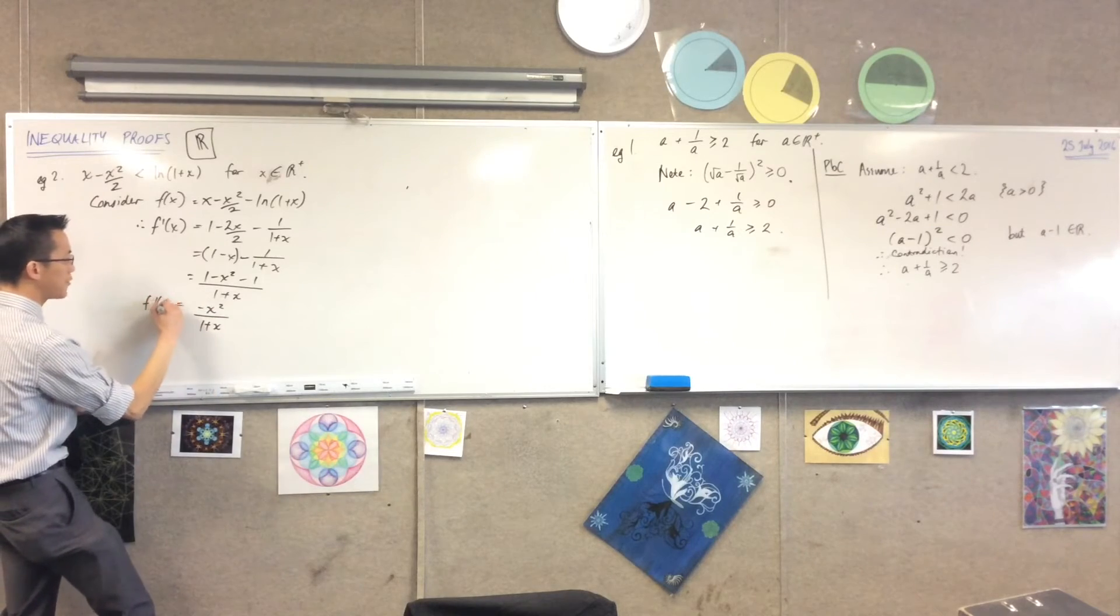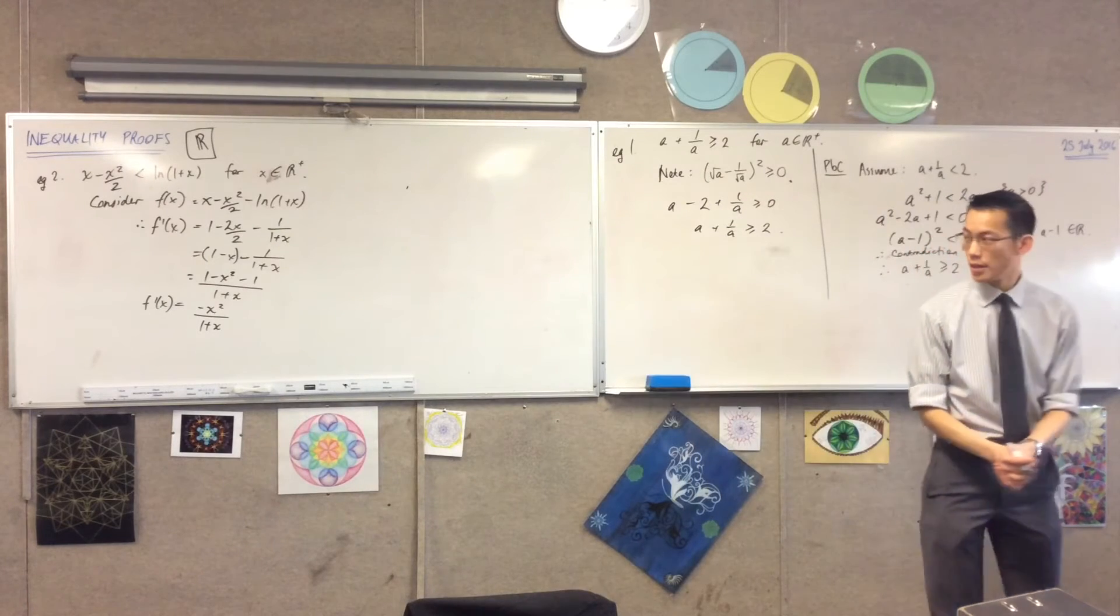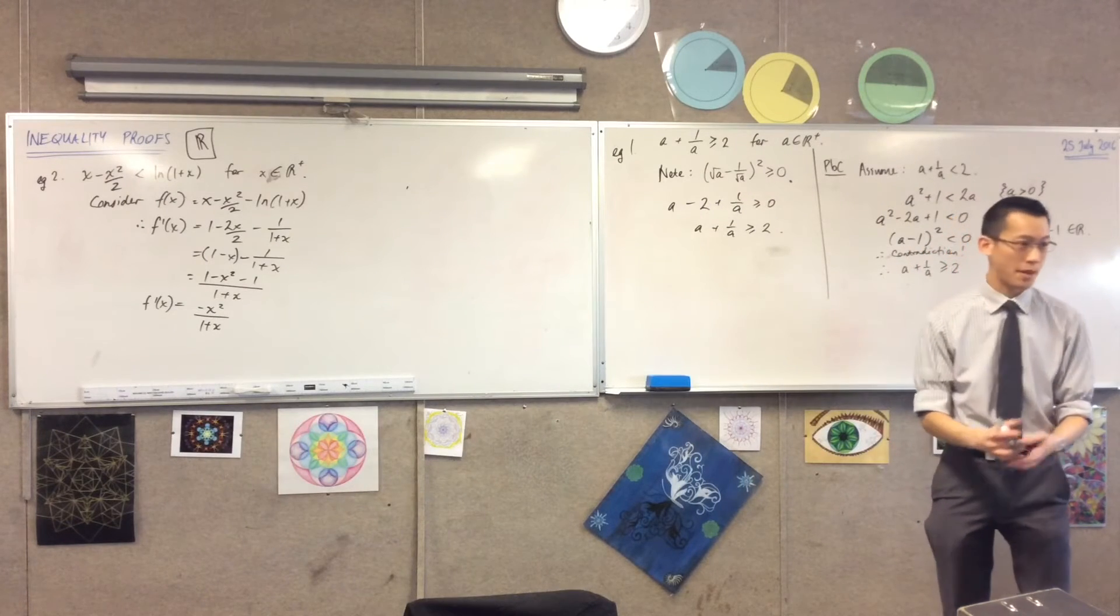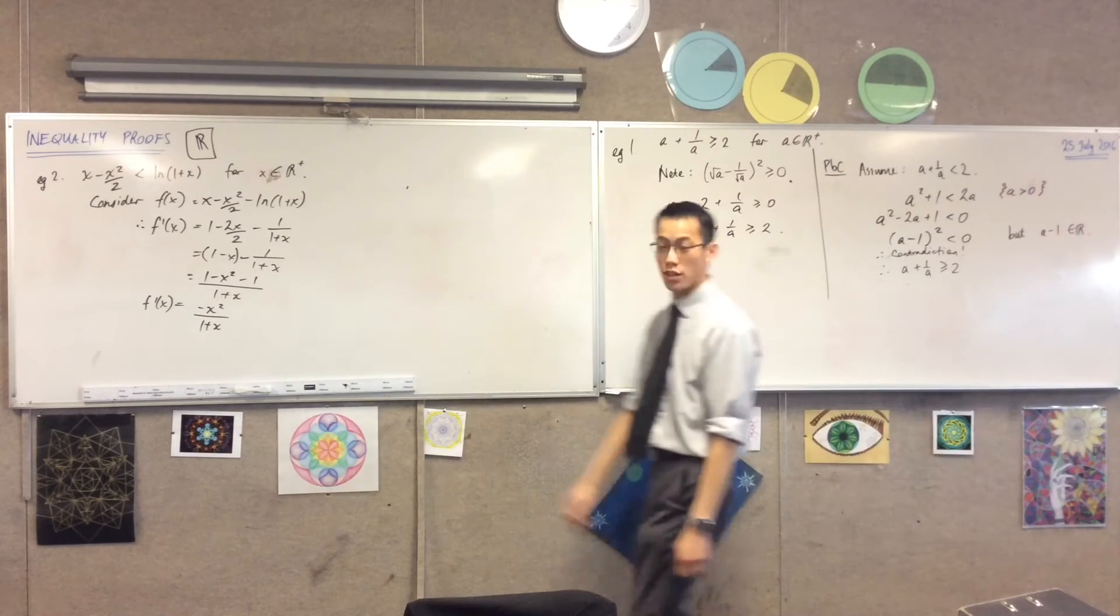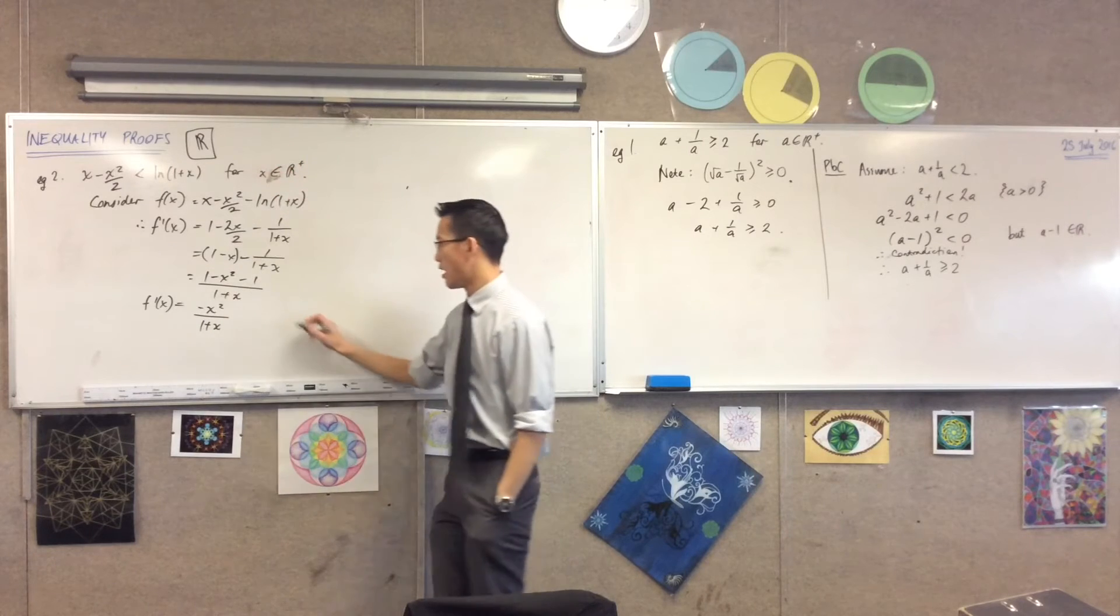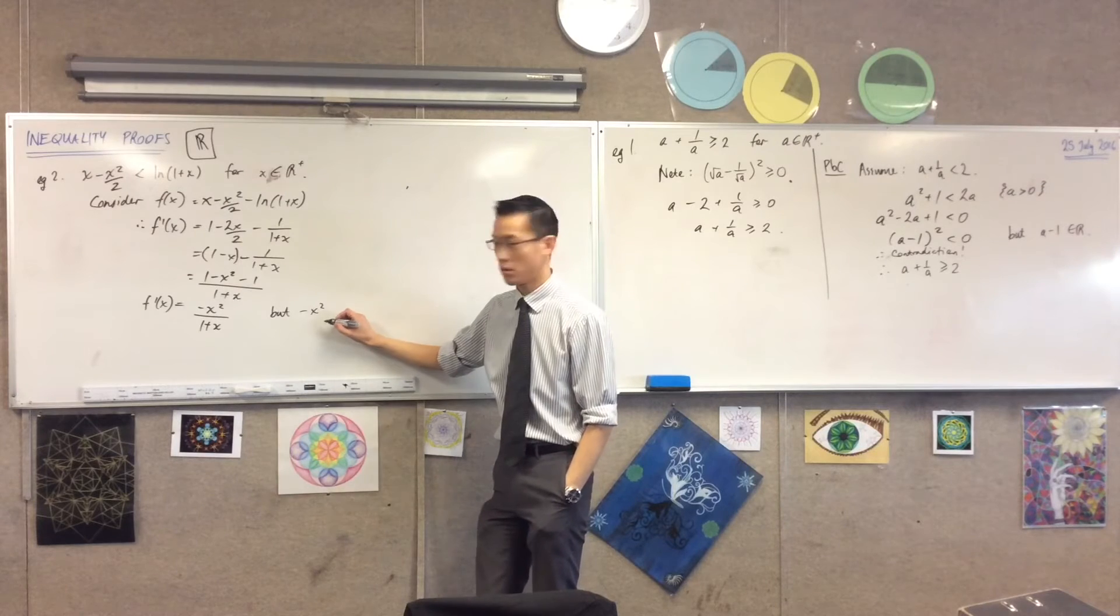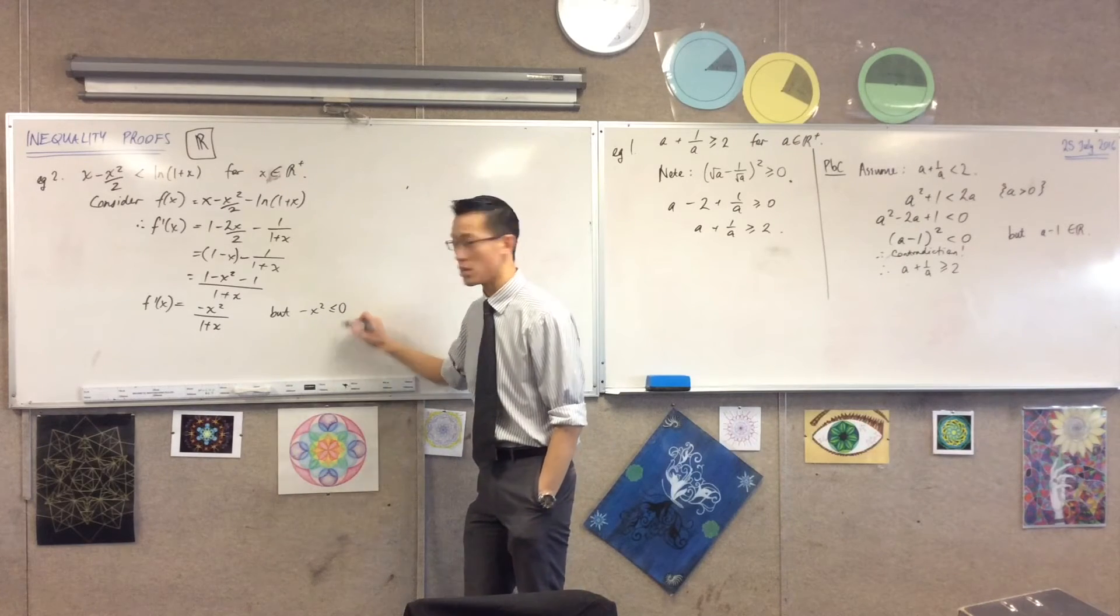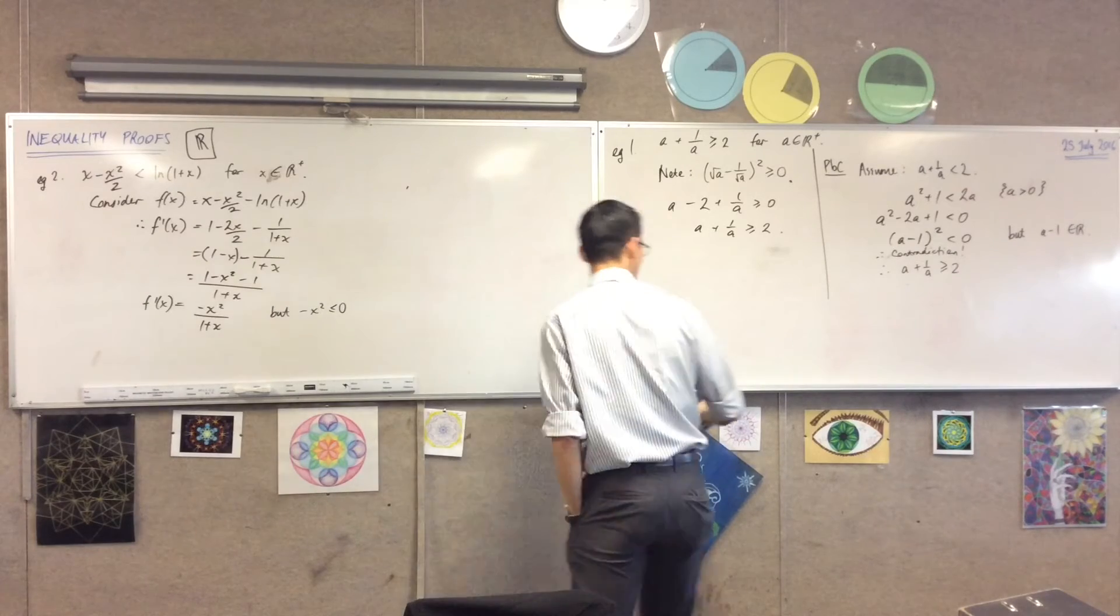Okay, so this is f dash, this is my derivative. Now call to mind all the things you know about functions, about signs, about inequalities. The first thing you know is, hey look at this guy up here. I mean, I'm in real land, right? I can say therefore negative x squared is going to be less than or equal to zero. Do you agree with that? In fact, I can go one better than that, can't I?